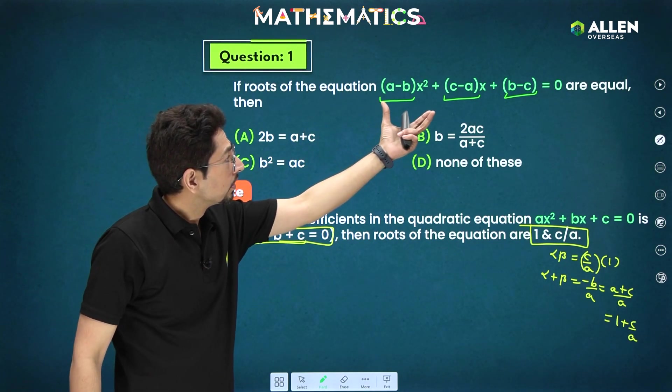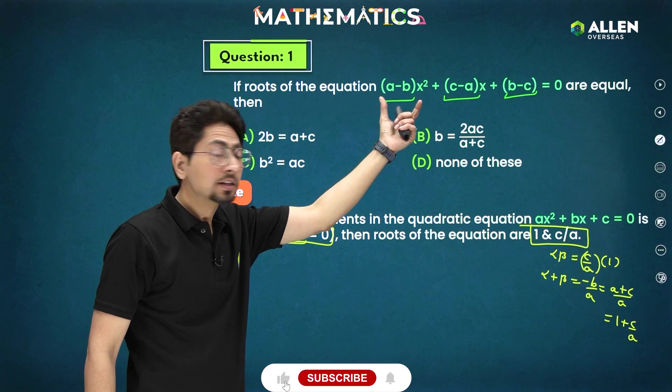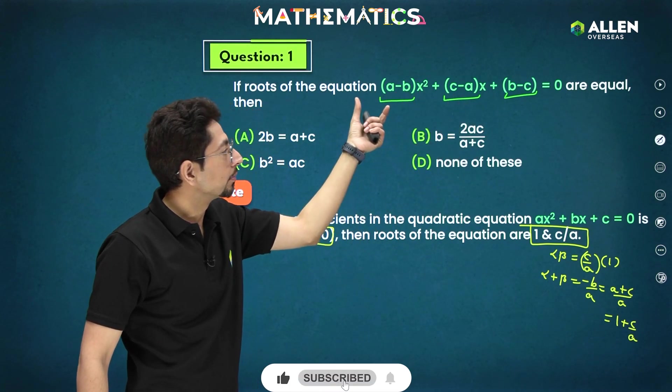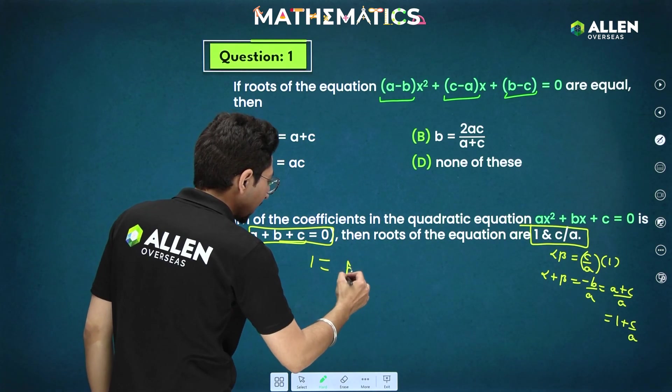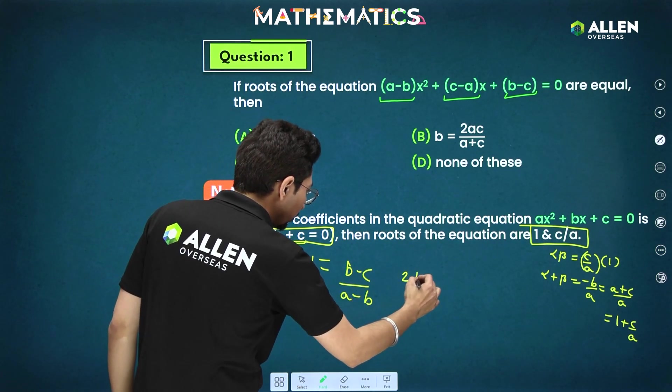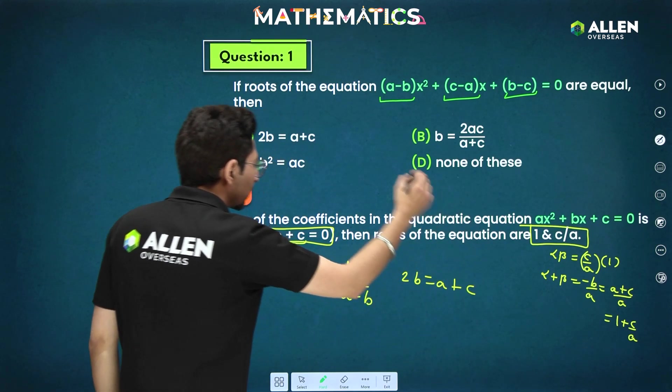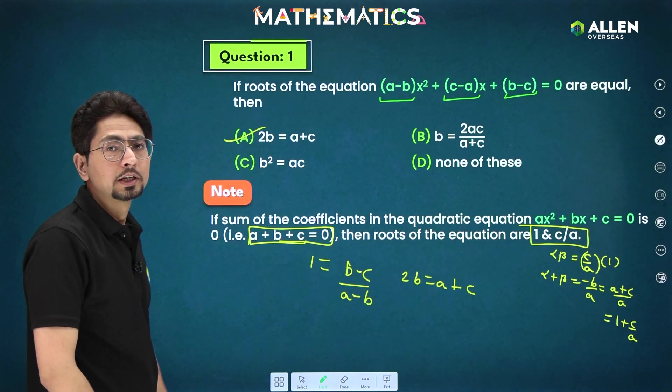So, what we have to apply in this? One root will be 1 and another will be (b - c)/(a - b). And it is also given both are equal. So, this will be (b - c)/(a - b) = 1 which gives me 2b = a + c. First option, 2b = a + c.